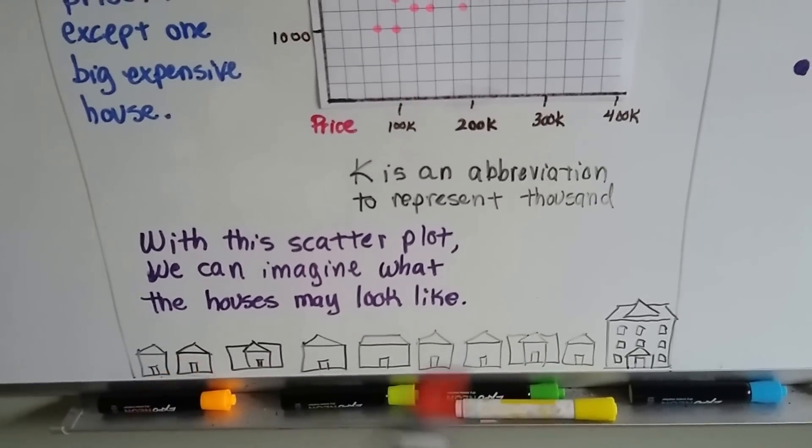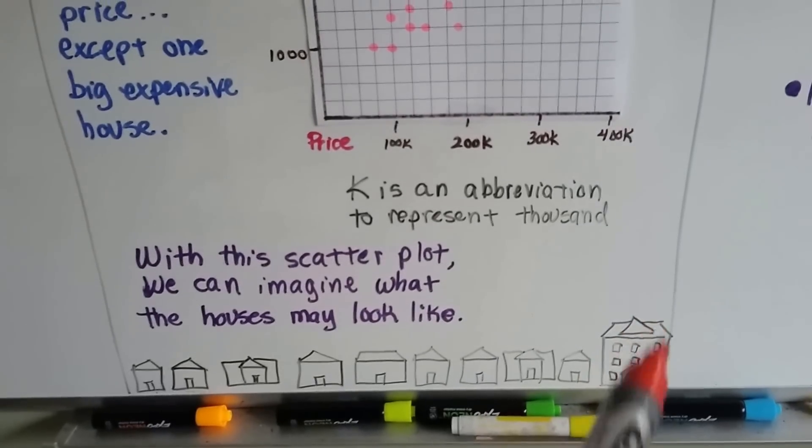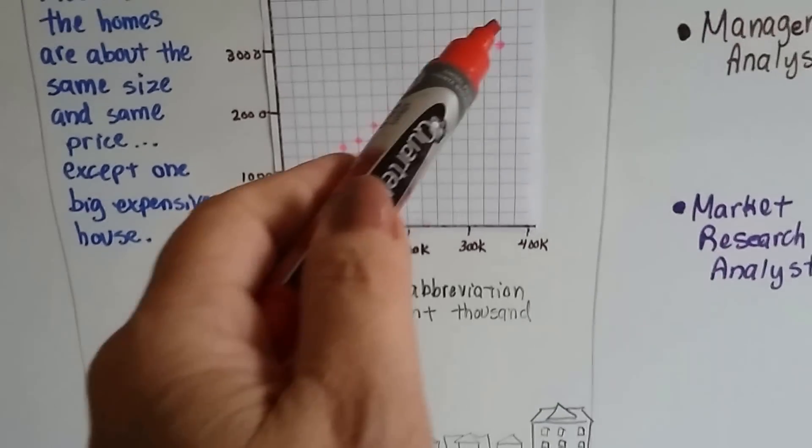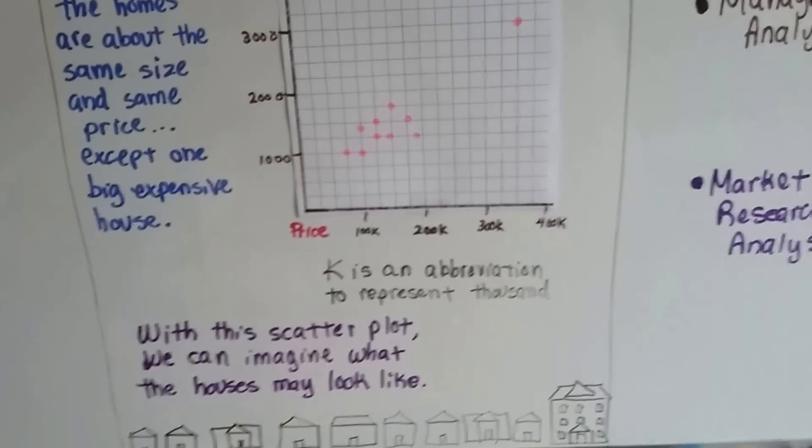They vary a little bit in size. And then there's this one big huge mansion. See? That's the outlier. That's the one that's sticking out like a sore thumb.